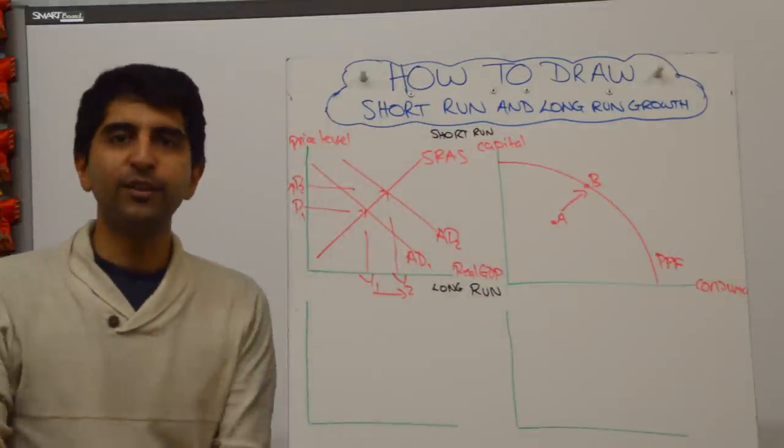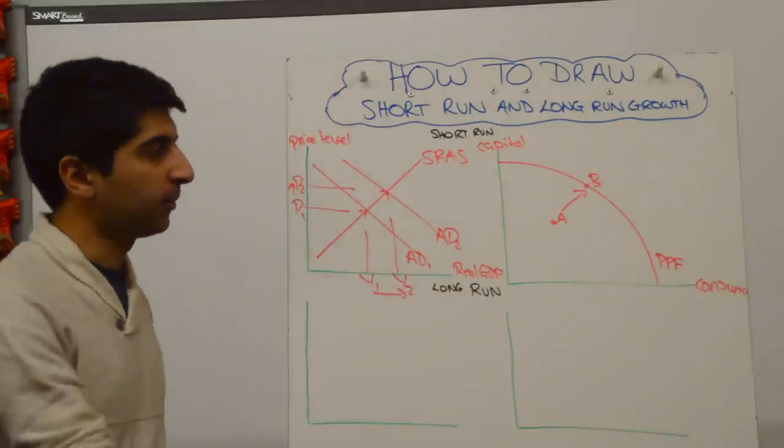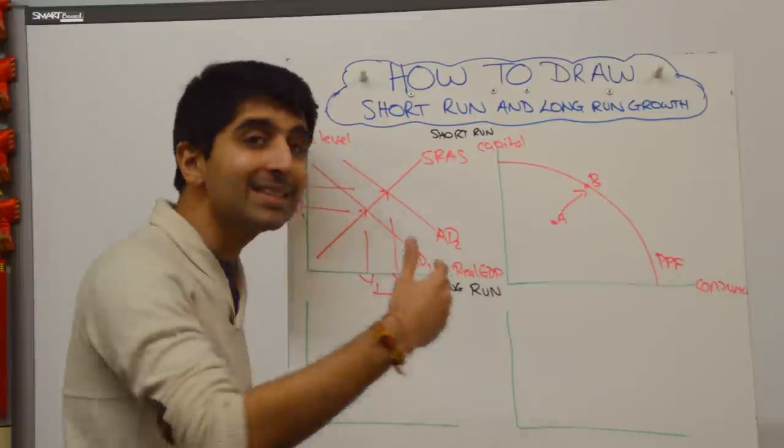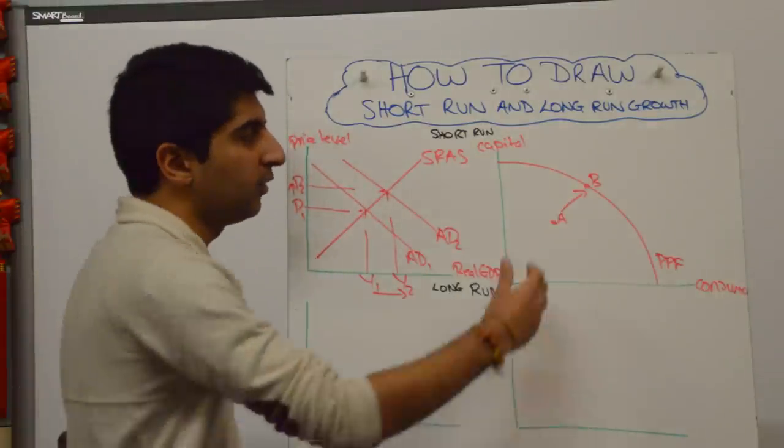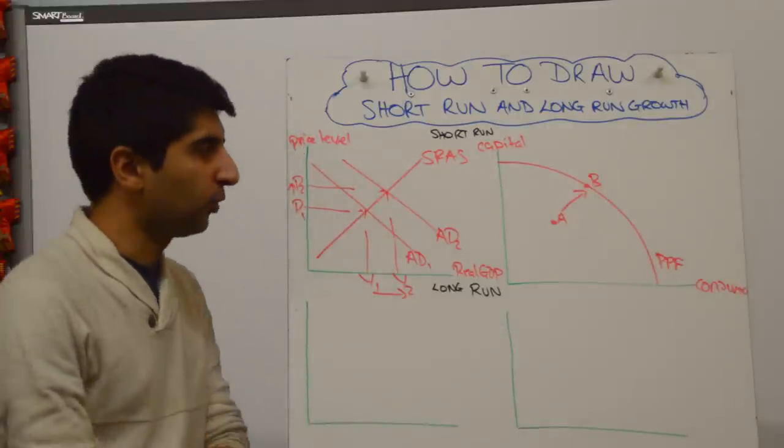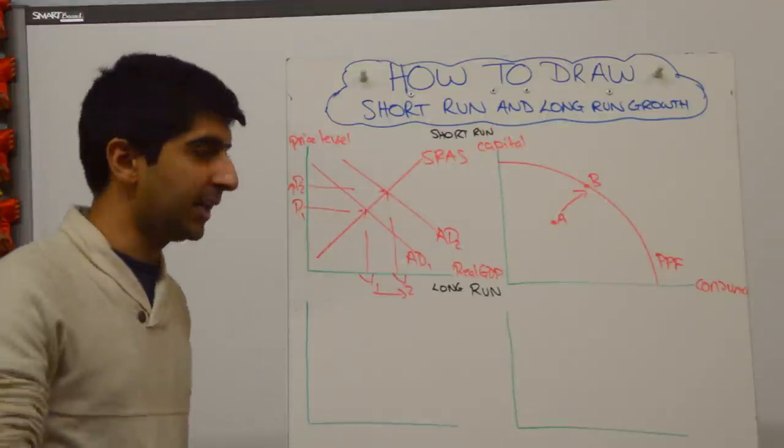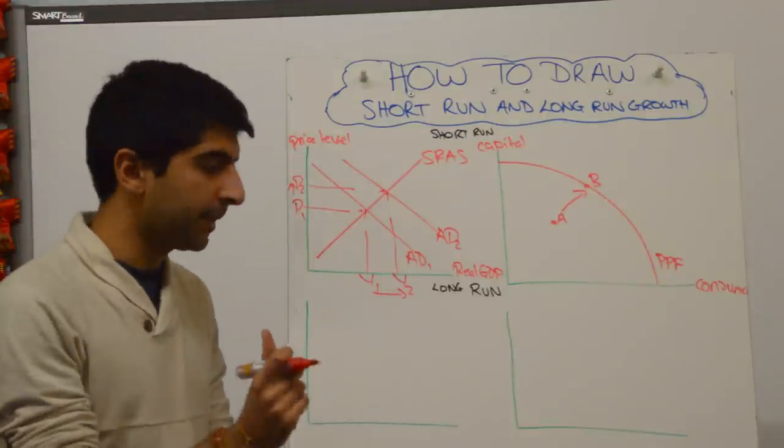That is all you need to show in terms of the PPF and that also shows short-term growth. An increase from a point inside the curve to a point on the curve. That movement there is your increase in short-term growth. So that's absolutely fine. A shift to the right of AD, basically using up spare capacity.